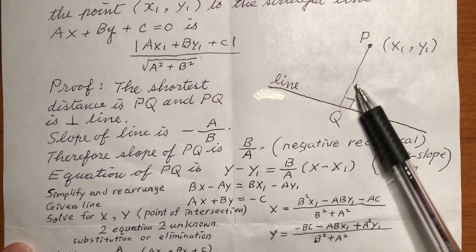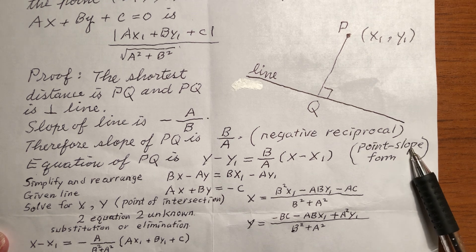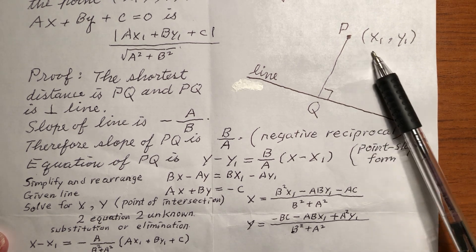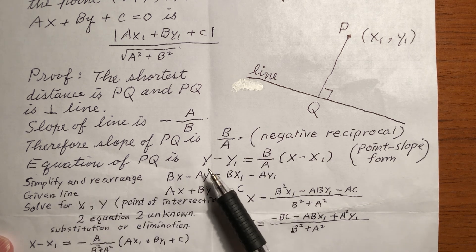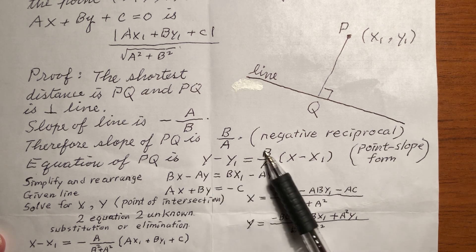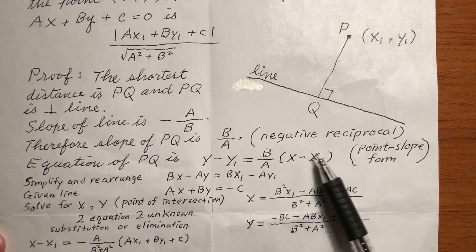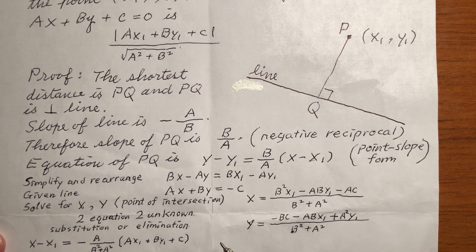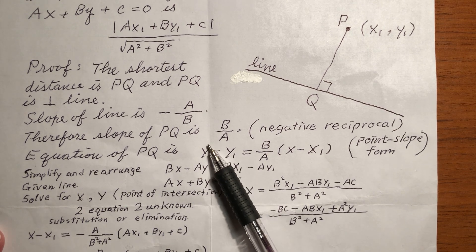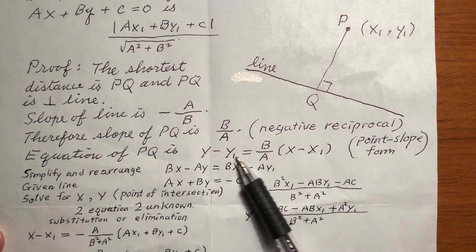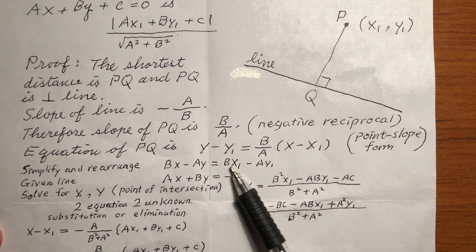Once we have the slope, we can write the equation of this line using point-slope form. We have the point and we have the slope. The point-slope form is y minus y1 equals the slope times bracket x minus x1. Simplify and rearrange this equation to get bx minus ay equals this.